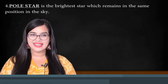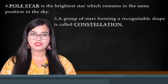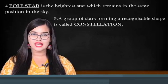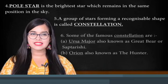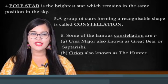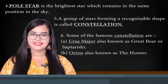Number five: a group of stars forming a recognizable shape is called a constellation. Number six: some of the famous constellations are Ursa Major, also known as the Great Bear or Sapta Rishi, and Orion, also known as the Hunter. That's all for today, students — see you in the next class.